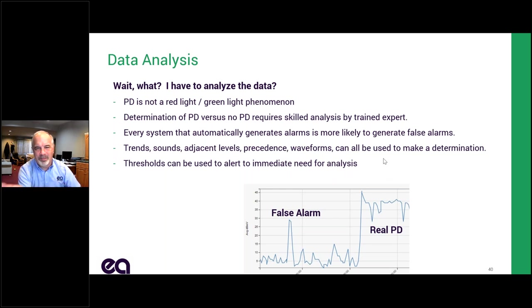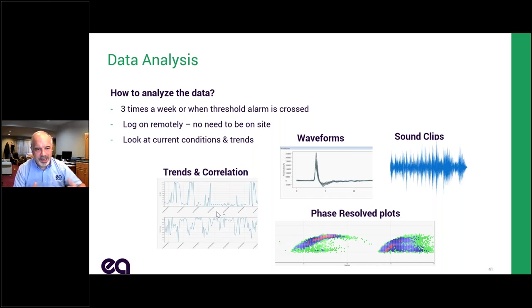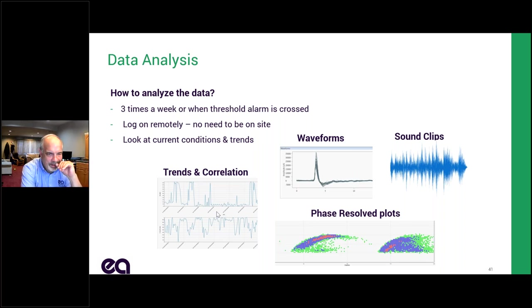We're going to use things like trending, listening to sounds, looking at levels across the system, looking at precedence, and looking at waveforms. If I had an alarm trigger on that false-alarm pulse, I would get something in my SCADA system, but I need to know it's a false alarm and when I've got real PD. Some of the data we're going to get are trends and correlations. Correlation means something is changing across multiple sensors simultaneously. If I have 10 sensors that are totally quiet and one sensor that's very loud, that's a correlation that something is going on. Or if humidity, temperature, and ultrasonic levels are all changing together — that correlation leads me to some sort of conclusion. A trend might be a level that's increasing slowly over time.